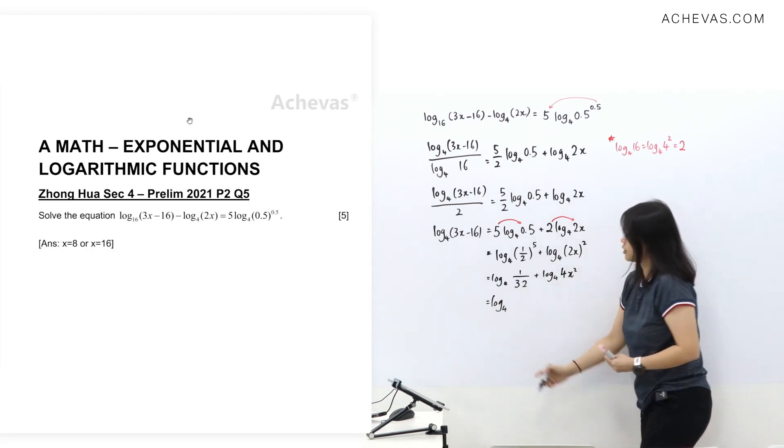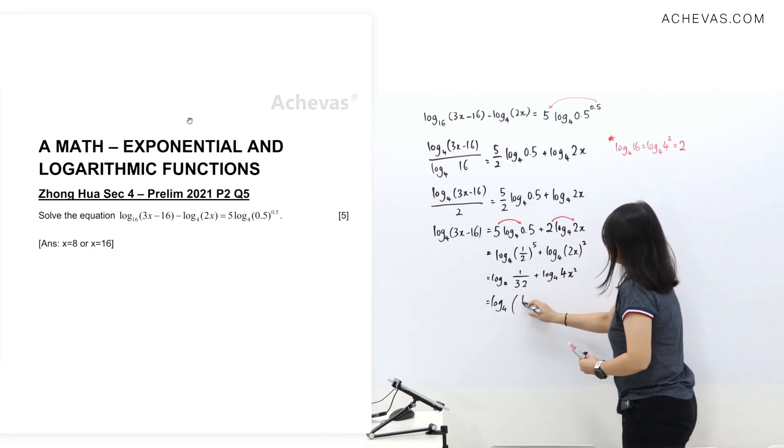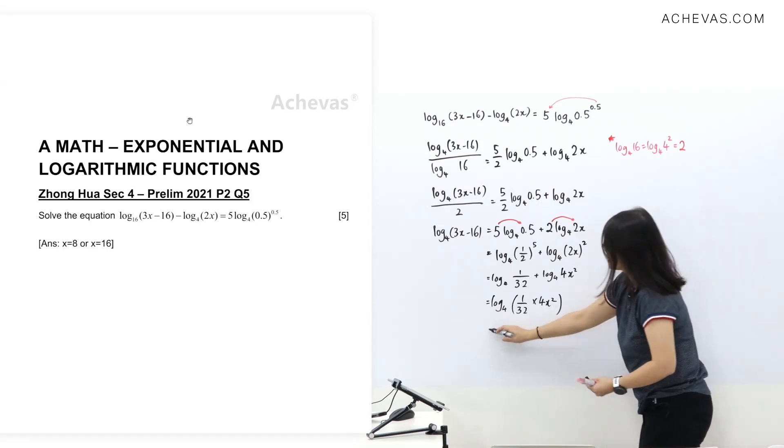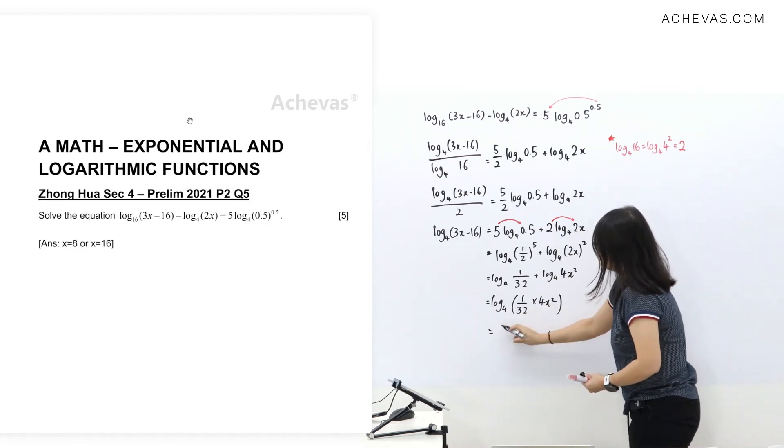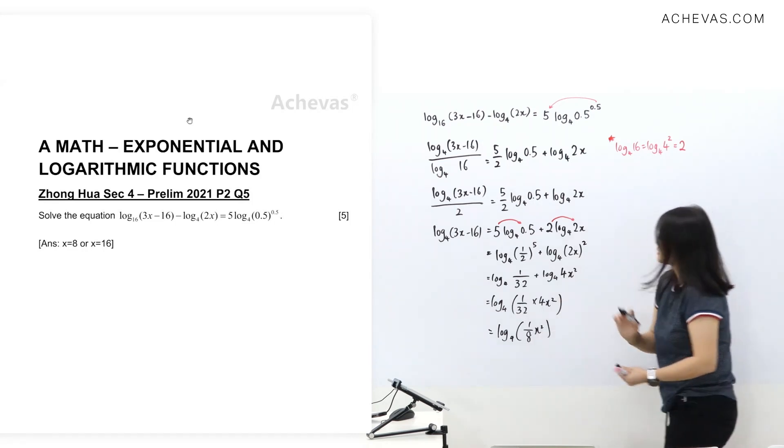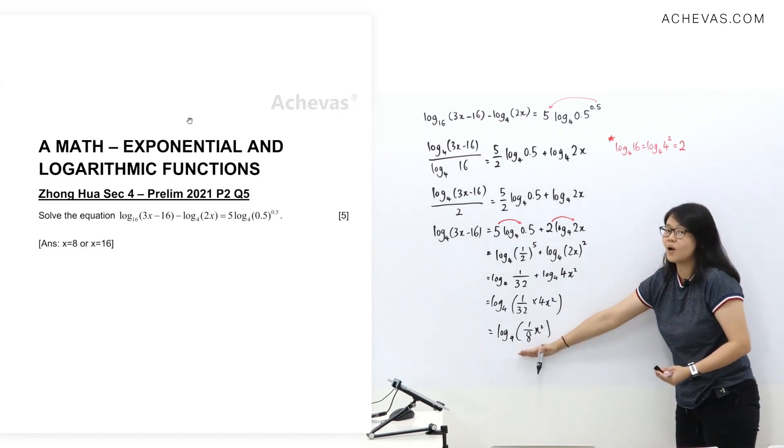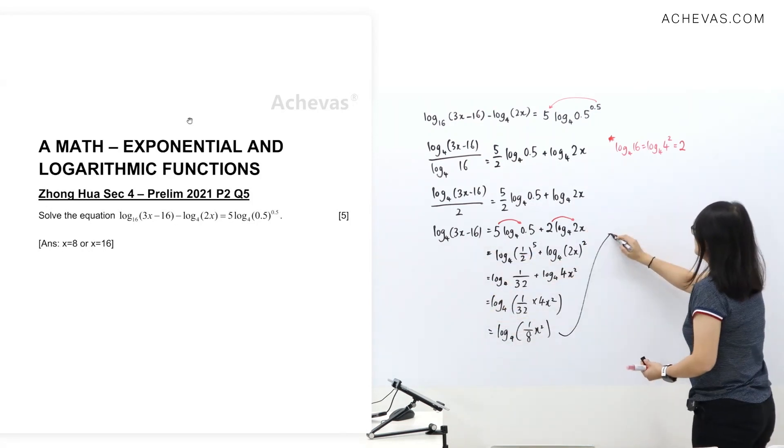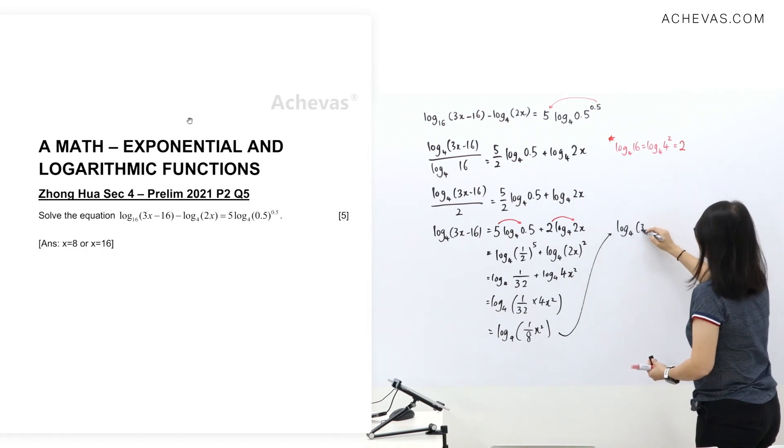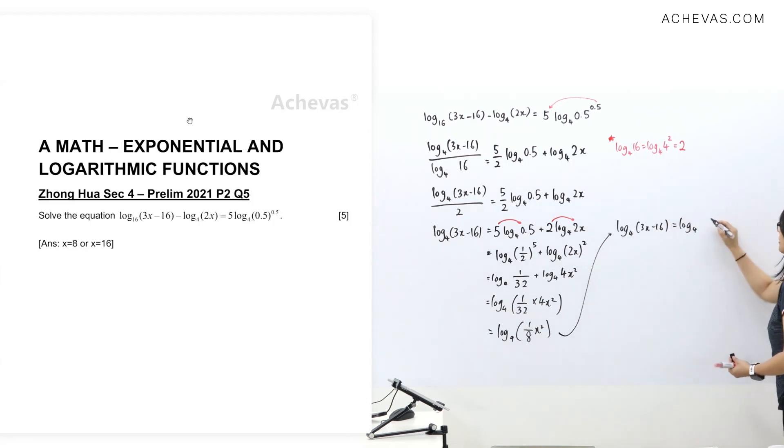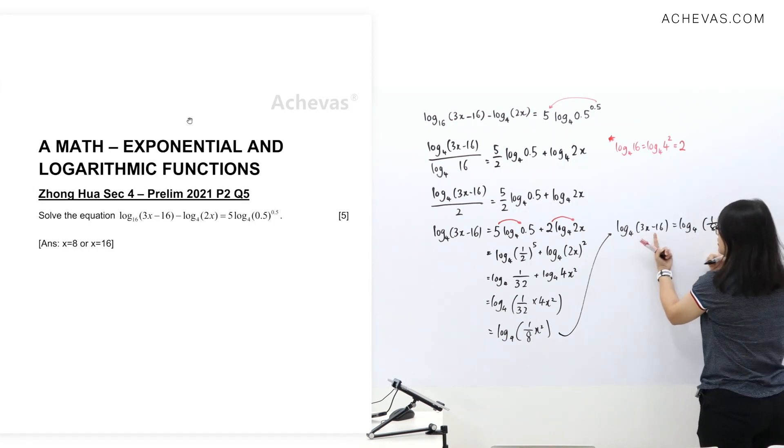Log addition. Combine the 1 log 4, then we take 1 over 32, multiply by 4x square. And using calculator 1 over 32 times 4, you will get 1 over 8. So, we get 1 log 4 on the right, 1 log 4 on the left. We're going to do next step, comparing. Left and right makes your solution very easy later on. Both are log 4. We're comparing these two brackets.